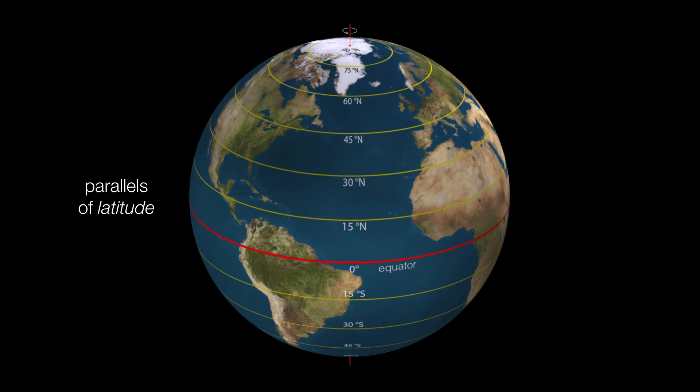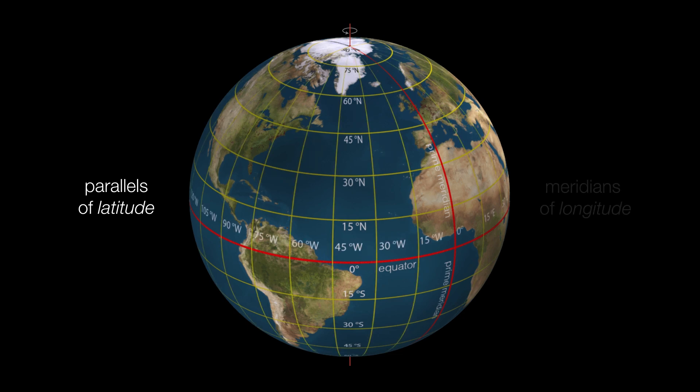Most of us live somewhere in between. We can define longitude by starting with the prime meridian, which goes from the North Pole through Greenwich, England to the South Pole. From there we can define meridians of longitude, which divides the Earth into eastern and western hemispheres.